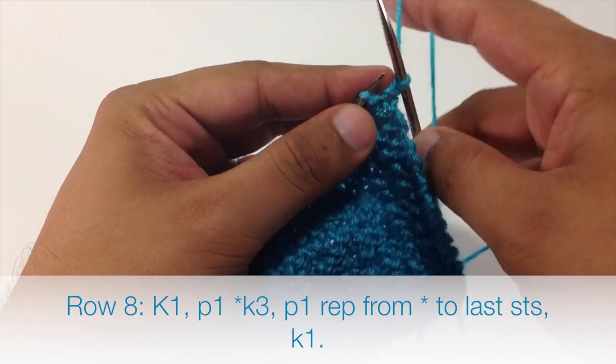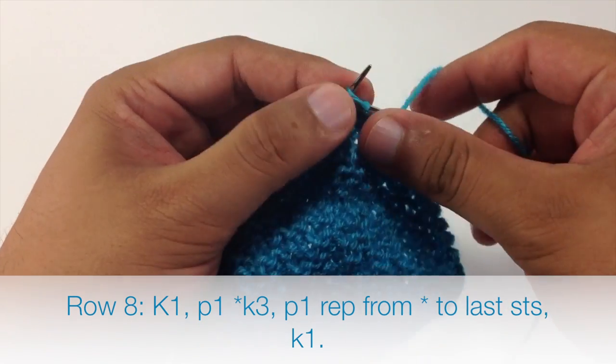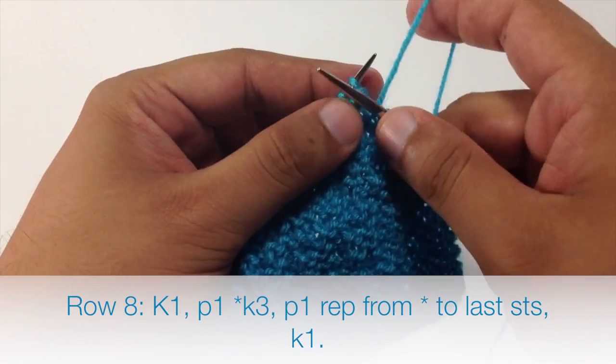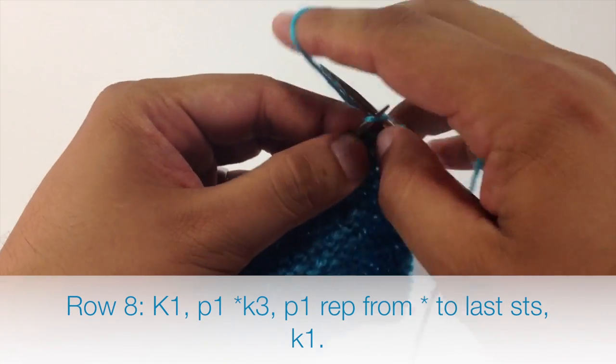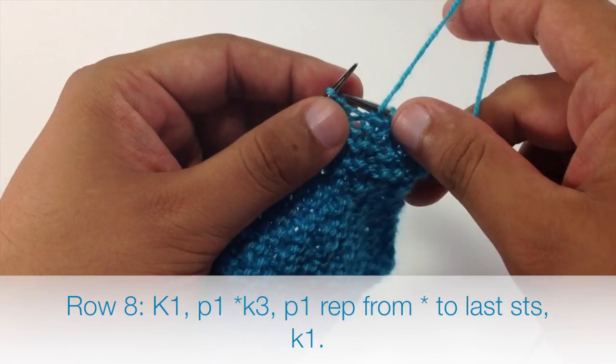Then we will purl 1. Then we will start our repeat by knitting 3, and we will finish our repeat by purling 1.